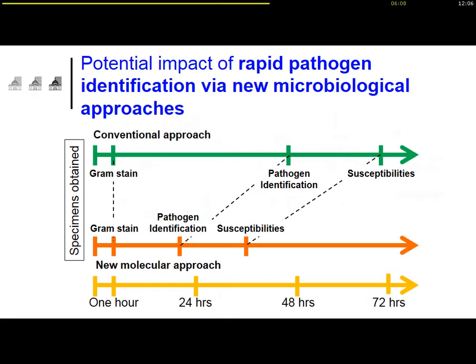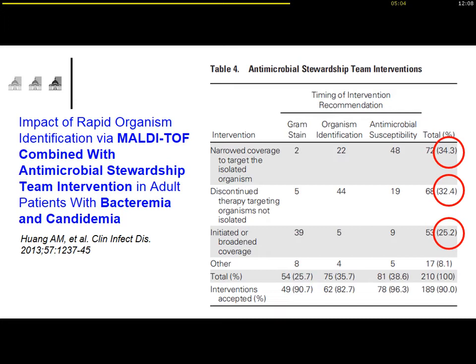Using those new techniques, it's possible to do a better job. This is a diagram comparing a conventional approach based on conventional microbiological cultures and a new approach based on PCR technology or the MALDI-TOF technology. Using those new techniques, it's possible to get pathogen identification in less than one day, and also to get susceptibility patterns a couple of hours later. So you will gain a lot of time for improving the administration of antibiotics.